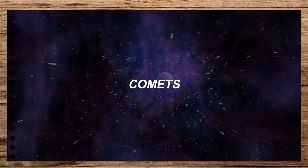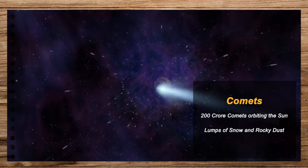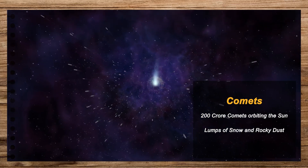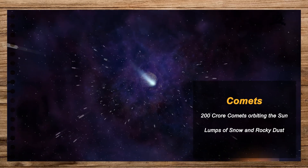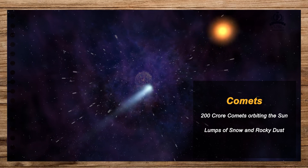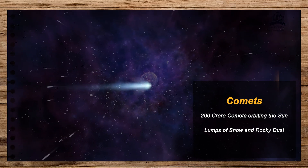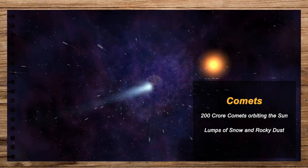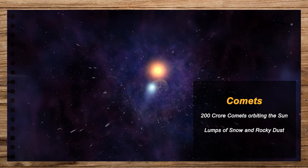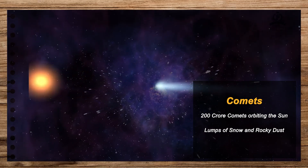It is believed that there are about 200 crore comets orbiting the Sun. Comets are huge lumps of snow and rocky dust. Each comet follows its own orbit around the Sun. When comets reach near the Sun they start glowing and develop a long tail.